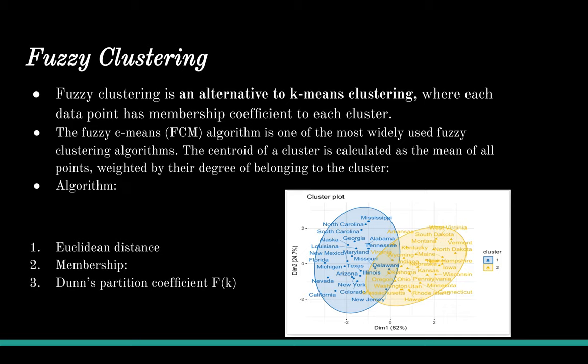Next we are going to talk about fuzzy clustering. This is an alternative to K-means clustering where each data point has a membership coefficient to each cluster. The fuzzy C-means algorithm is one of the most widely used fuzzy clustering algorithms. The centroid of each cluster is calculated as the mean of all points weighted by their degree of belonging to the cluster. The algorithm proceeds as follows: first, use Euclidean distance to calculate the dissimilarity matrix. Next is membership — a matrix containing the degree to which each observation belongs to a given cluster, where column names are the clusters and rows are the observations. Third is Dunn's partition coefficient of the clustering, where K is the number of clusters.